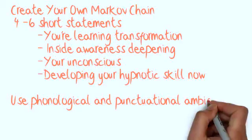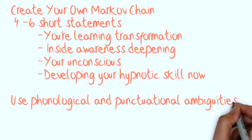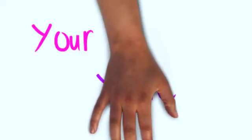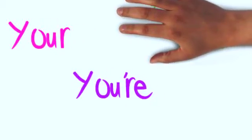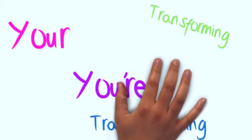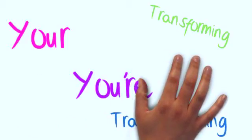The next step is to play with phonological and punctuational ambiguities. Phonological ambiguities are words with different meanings that sound the same. For example, you're and your, transforming and trans-forming. Punctuational ambiguities confuse the conscious mind as to when exactly one statement has finished and the next one has begun.